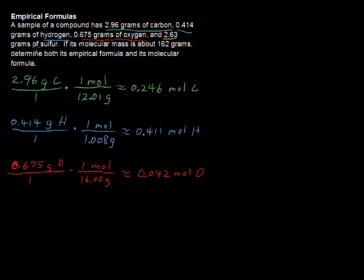And last is sulfur. 2.63 grams of sulfur. And multiplying that by the appropriate conversion, we have for every 1 mole of sulfur, again looking in the periodic table, we see the molar mass of sulfur is 32.07 grams, which gives us approximately 0.082 moles of sulfur.